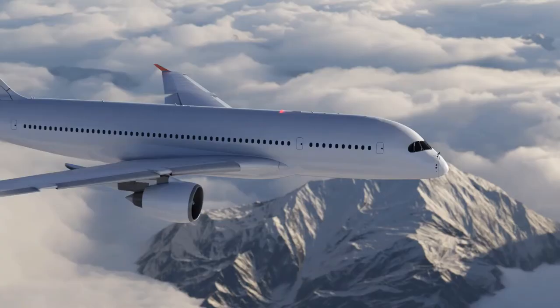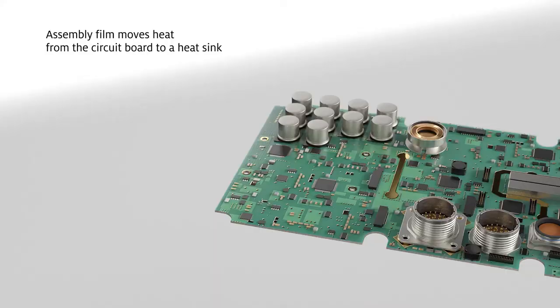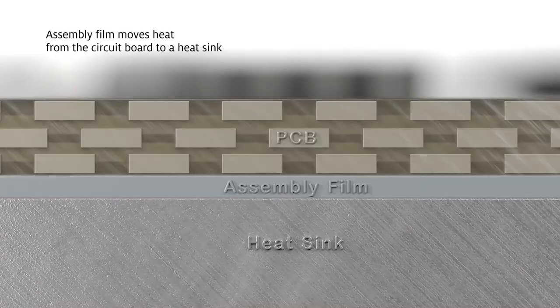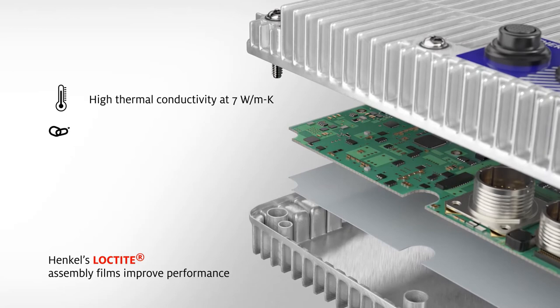From monitoring air traffic to detecting dangerous weather, radar systems are vital for improving flight safety and efficiency. Assembly of higher-functioning circuit boards must consider heat buildup to preserve reliability. Aerospace engineers prefer Henkel's assembly film for thermal management in circuit assembly. This film safely and reliably removes heat from the circuit board by connecting it to a metal heat sink.